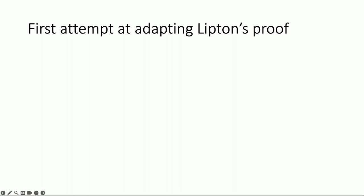Now let's use this polynomial structure to adapt Lipton's proof. Lipton's proof assumes the ability to compute the permanent of a random matrix, but we want the permanent of a particular worst-case matrix. The strategy: take the worst-case matrix and make it look cleverly more random, because that's what you have the ability to compute. This Lipton argument is all about taking the worst-case matrix and scrambling it, but scrambling it in a way that preserves structure you can pull back.